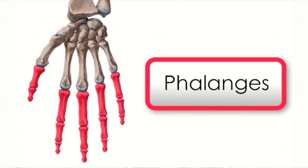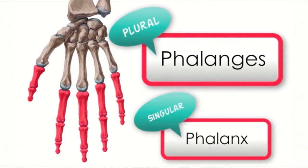Keep in mind that phalanges is plural for phalanx, so the singular form is phalanx. A phalanx is one of these bones that you see here, and combined they are known as phalanges.